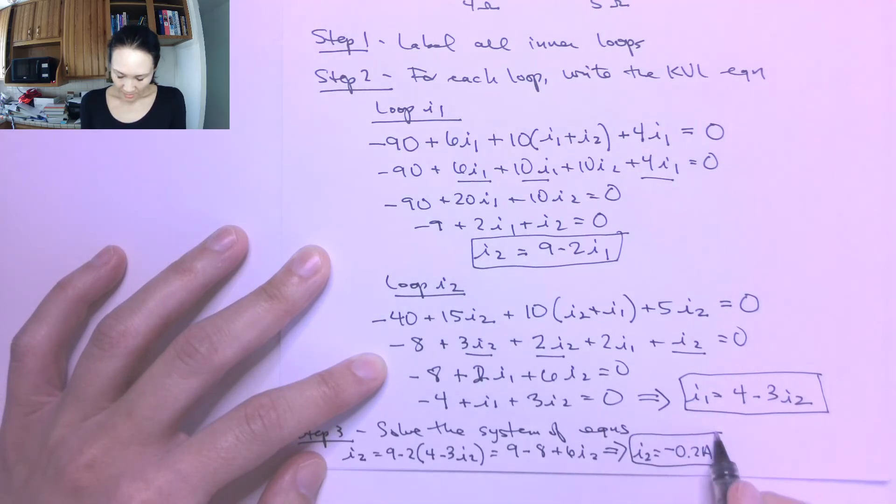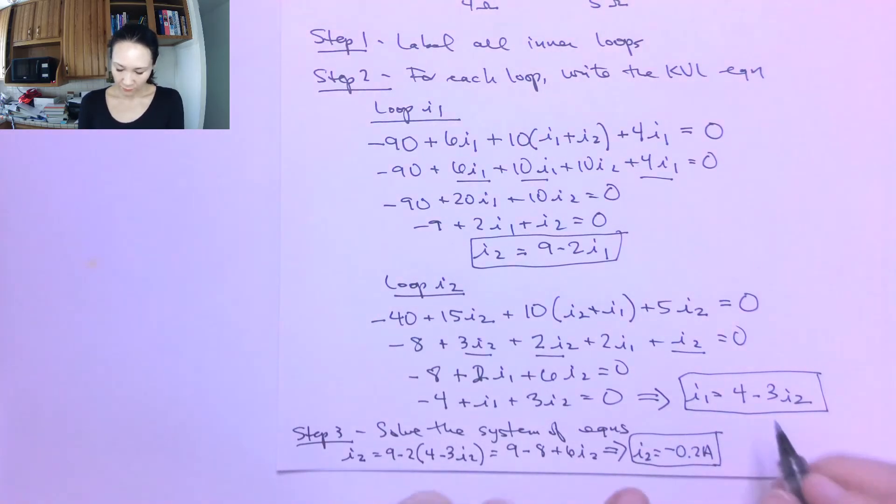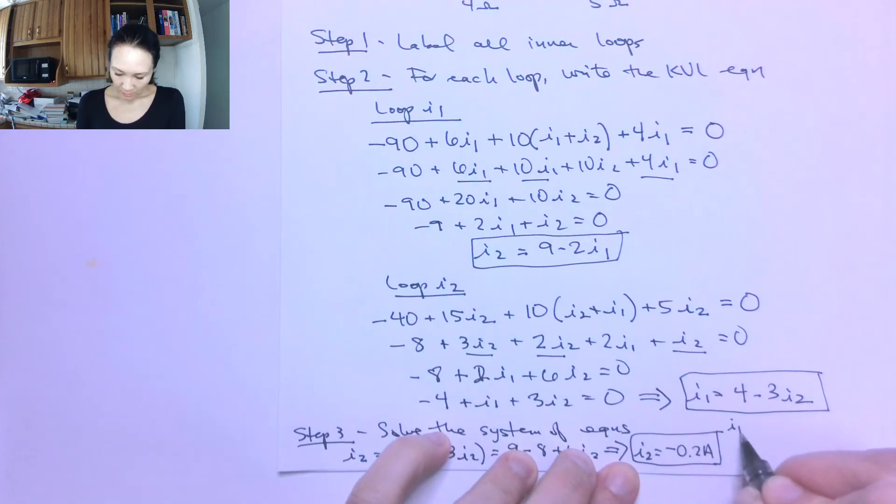Then, if I plug this in for my I1 equation, 4 minus 3 times negative 0.2, then I get for I1, 4.6 amps is my I1.